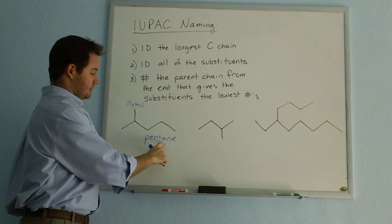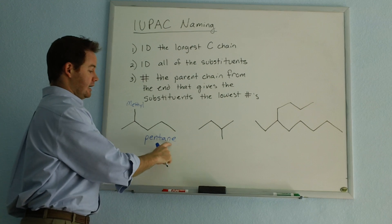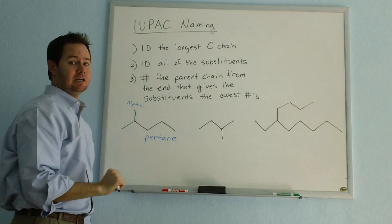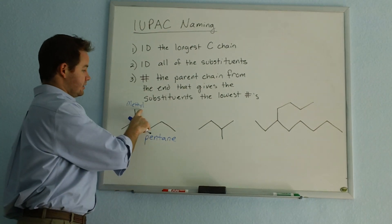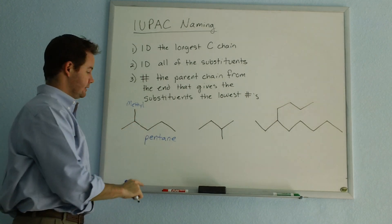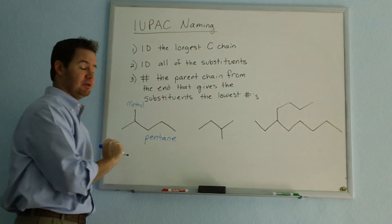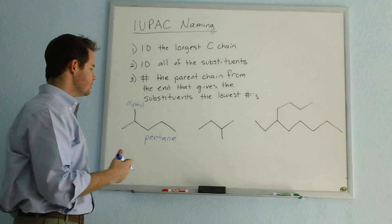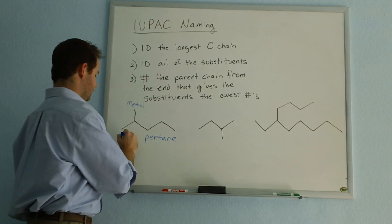The chain gets the suffix a-n-e, because it's an alkane. The substituent gets the suffix y-l, because in naming it's going to be what comes before our chain. So this will be a methyl pentane.